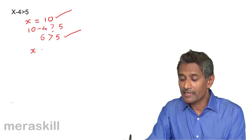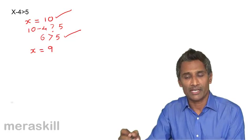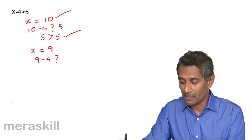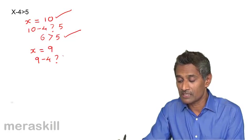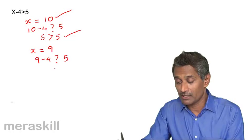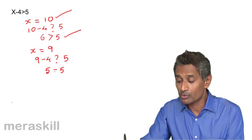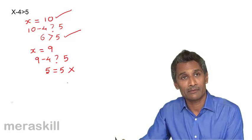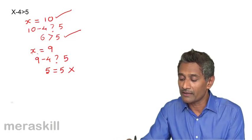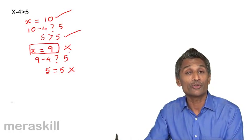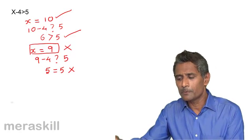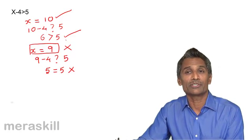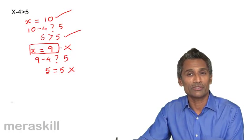Now let's try x = 9: substituting gives 9 - 4 = 5, and we need the result to be greater than 5, but 5 is not greater than 5 — both sides are equal. So x = 9 is not a valid solution to this inequality. This example helps us understand how to judge whether something is a solution to a given inequality.